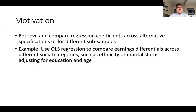We run a lot of regressions in economics and other fields, and very often we're interested in comparing regression coefficients across a variety of potential alternative specifications, or for different subsamples, or for different factor variables. We can present all the results in a table, but oftentimes it's nice to have some visualization. My example is a very common type of regression in labor economics called an earnings equation — an ordinary least squares regression — where we compare earnings differentials across different social categories like ethnicity or marital status.